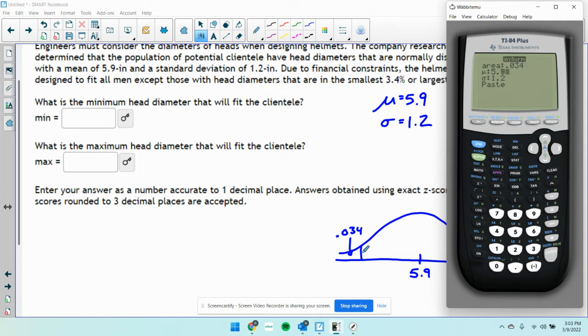μ is 5.9, standard deviation is 1.2. So this is 3.7.